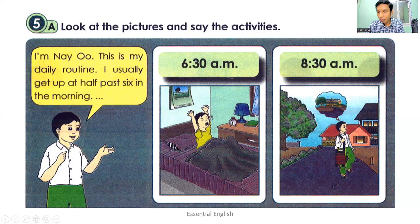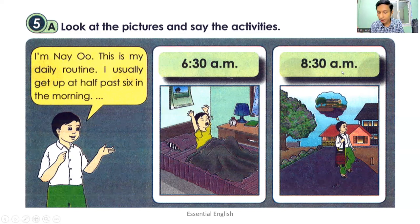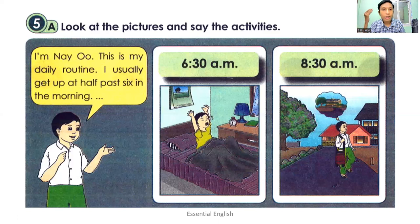Please look at the second picture. What's he doing? He's going to school. The time is 8:30 A.M. — in other words, it's half past eight in the morning. So you can say: I always go to school at half past eight in the morning.